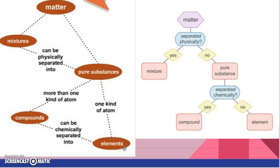Your pure substances, you have two choices. If it's only one kind of atom, it's an element on the periodic table. If there's more than one kind of element chemically combined, it's a compound. Since it's chemically combined, we can chemically separate the elements in a compound into just the elements.